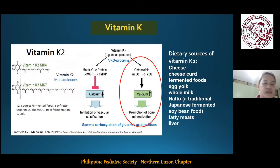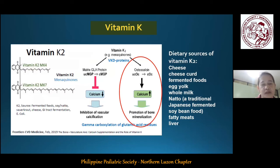Vitamin K is a multifunctional vitamin which has gained the spotlight for its efficacy in enhancing bone turnover. Vitamin K promotes bone formation by increasing the level of some bone formation markers and regulating extracellular matrix mineralization. Vitamin K2 is primarily bacterial in origin and found in animal-based foods such as cheese, cheese curd, fermented foods, egg yolk, whole milk, and fatty meats and liver.